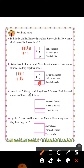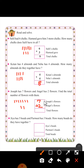Joseph has seven flowers and Angel has two flowers. Find the total number of flowers with them. Joseph has seven, Angel has two. Add: one, two, three, four, five, six, seven — one, two. Now count together: one, two, three, four, five, six, seven, eight, nine. Total flowers are nine.